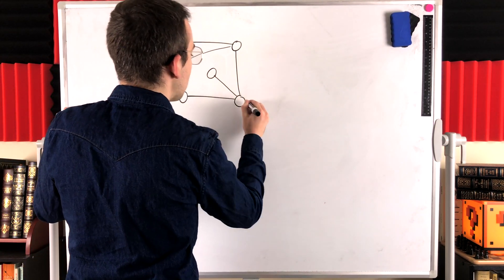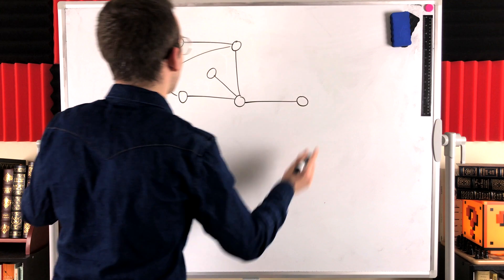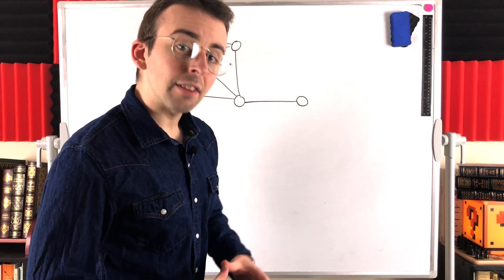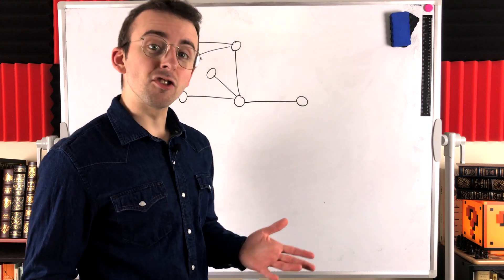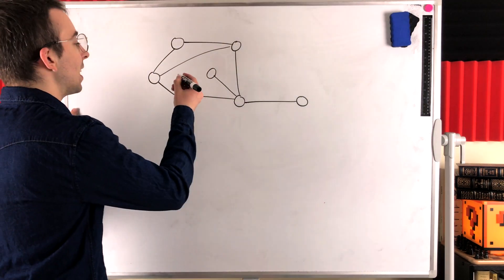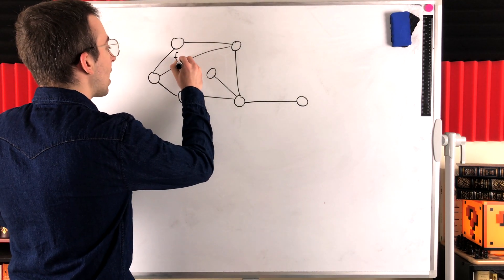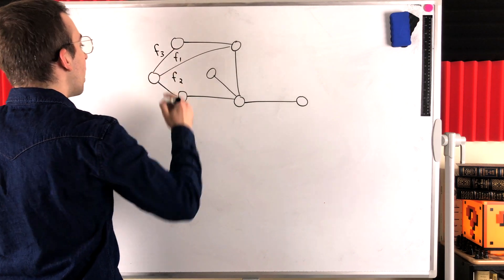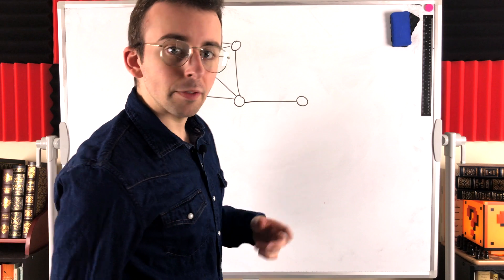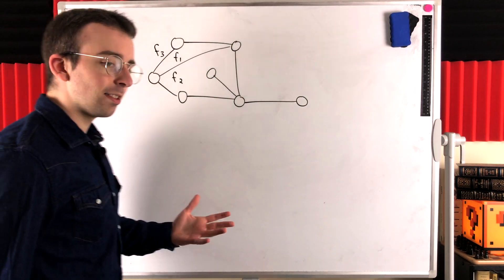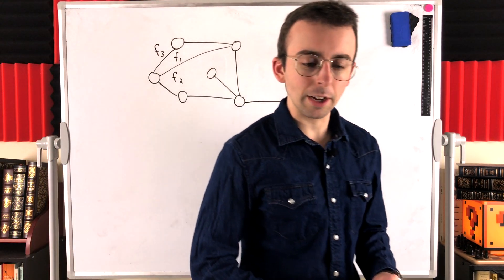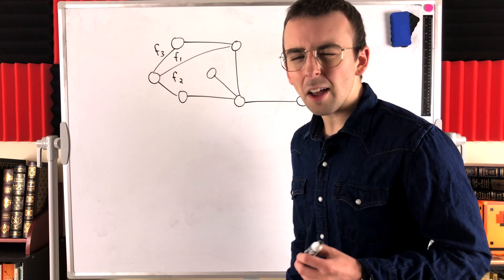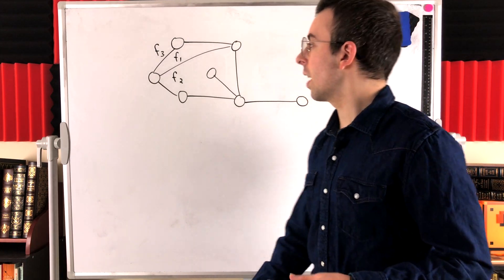So this is a plane graph — a graph drawn in the plane with no edge crossings. Recall that a plane graph divides the plane into regions or faces. We'll label the faces of this plane graph F1, F2, and F3. I'll probably call them regions a lot for the rest of the lesson, so just know faces and regions mean the same thing. The boundary of a face of a plane graph is the subgraph that's incident to the face.